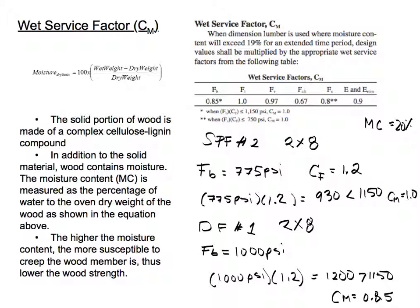Why we use the wet service factor is because the higher the moisture content, the more prone to creep the wood member is, thus lowering the wood strength. So we have to take into account the moisture and how wet our wooden member is.